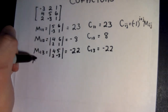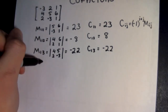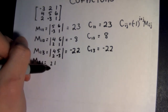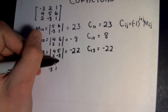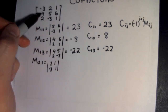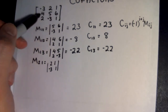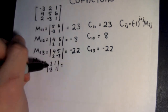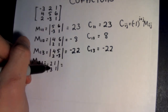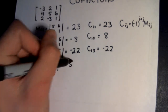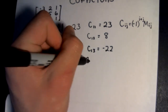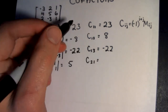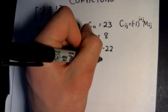Now we have the second row to deal with. For M21, we get rid of the second row and first column, giving us 2, 1, negative 3, 1. That determinant is going to be 2 minus negative 3, so that's 5. For the cofactor of C21, that's an odd number — 2 plus 1 is 3 — so it's going to be negative 1 times 5, which is negative 5.